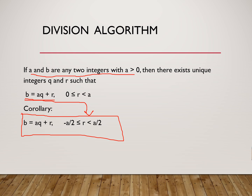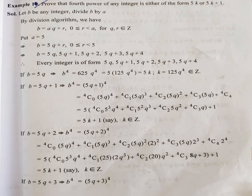The first example: prove that the fourth power of any integer is either of the form 5k or 5k plus 1. Here we have to take the fourth power of any integer. Let B be any integer. We have to divide B by A using the division algorithm B equals AQ plus R. Since the answer involves 5 and 5k plus 1, we take A equal to 5.